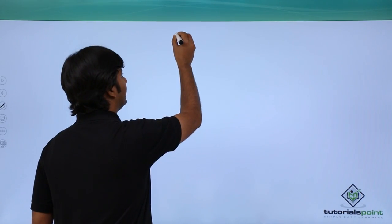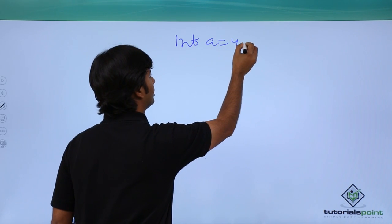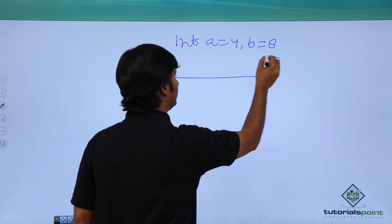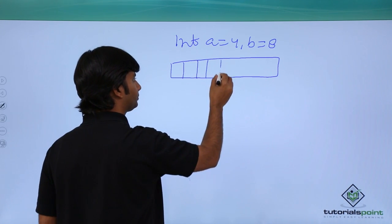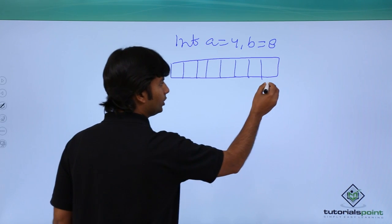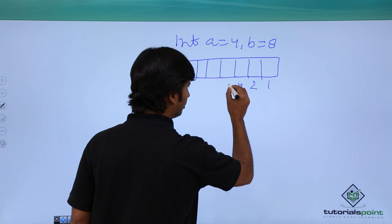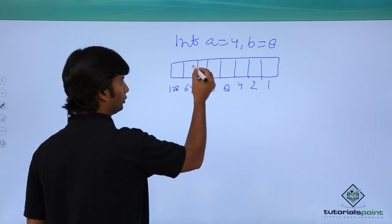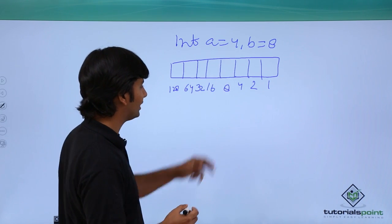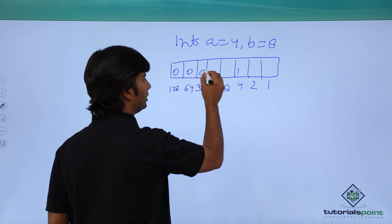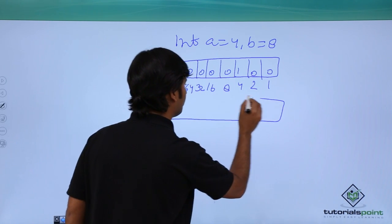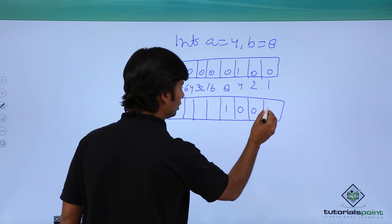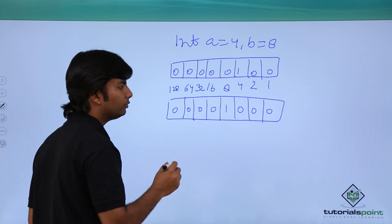Let's see how these operators work. We have a variable int a equal to 4 and b equal to 8. To convert them to binary we use 8 bits — one byte — starting from positions 1, 2, 4, 8, 16, 32, 64, and 128. For the value 4, I put a 1 in the fourth position and the rest are zero. For b equal to 8, I put a 1 in the eighth position and the rest are zero.